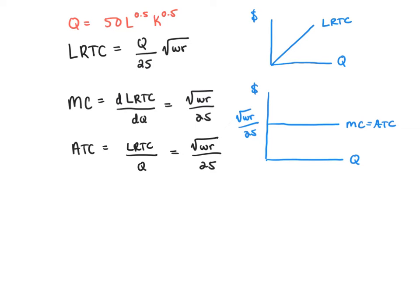Here I'm presenting again, for your convenience, the production function and the corresponding long-run total cost function. If we take the derivative of that total cost function with respect to output, we derive the marginal cost equation, which here is a constant: the square root of W times R divided by 25. Marginal cost is constant and so graphically is represented by a horizontal line.